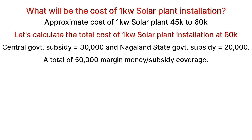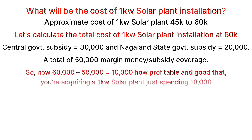If the state government's subsidy is about ₹20,000, then the central government subsidy of ₹30,000 plus the state subsidy of ₹20,000 equals ₹50,000 total subsidy. The total installation cost is ₹60,000.